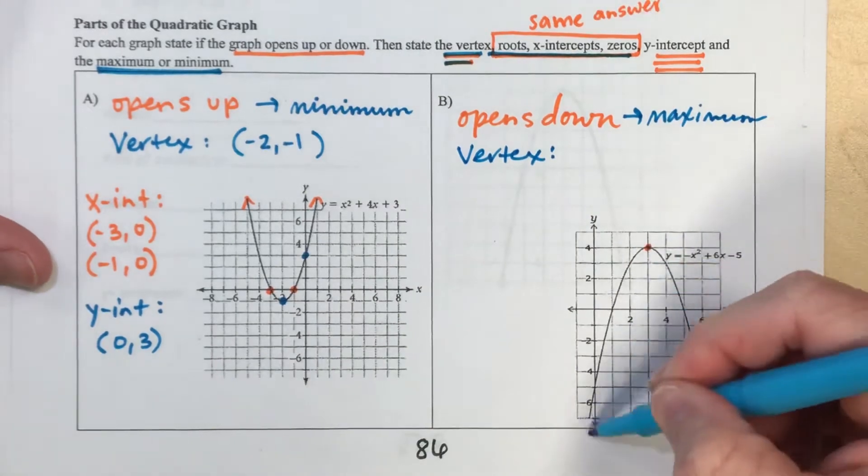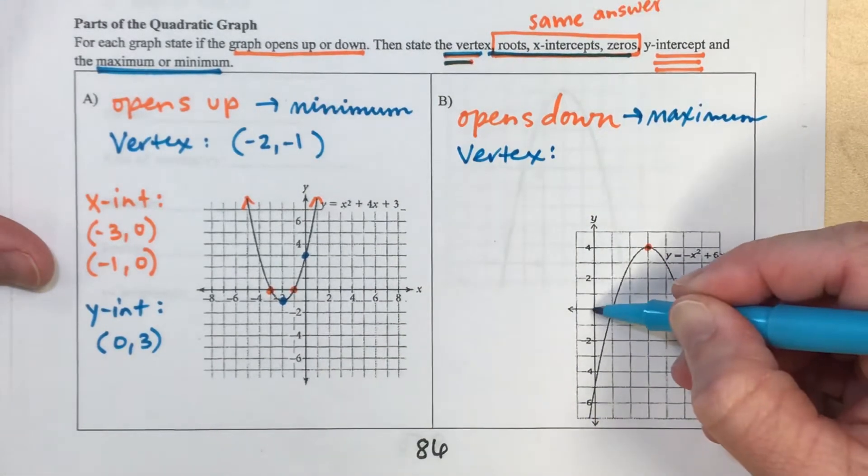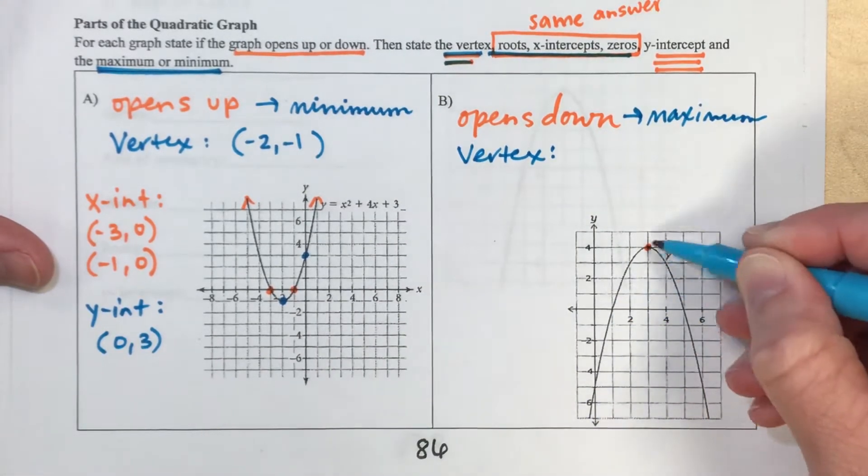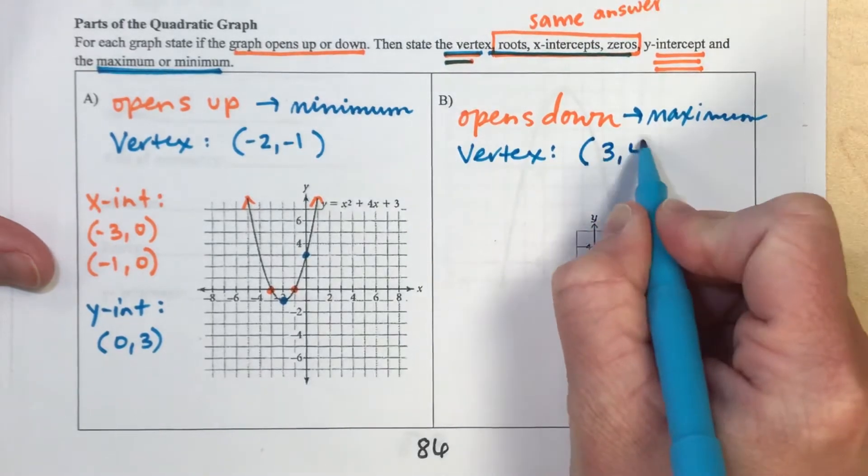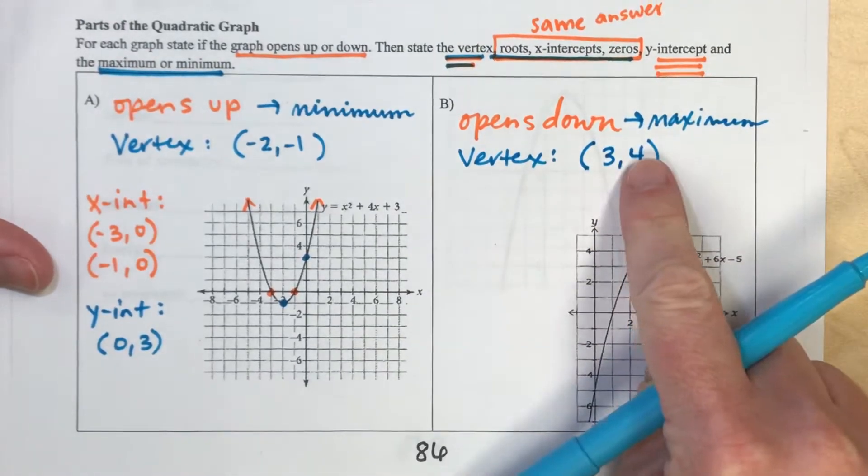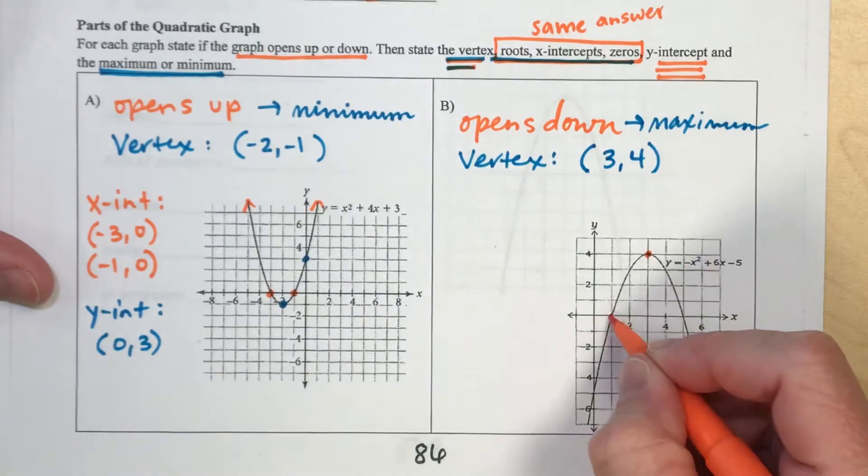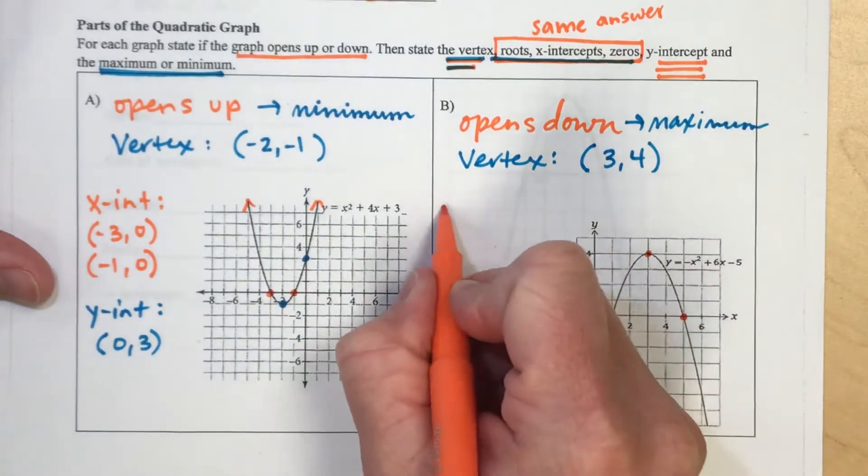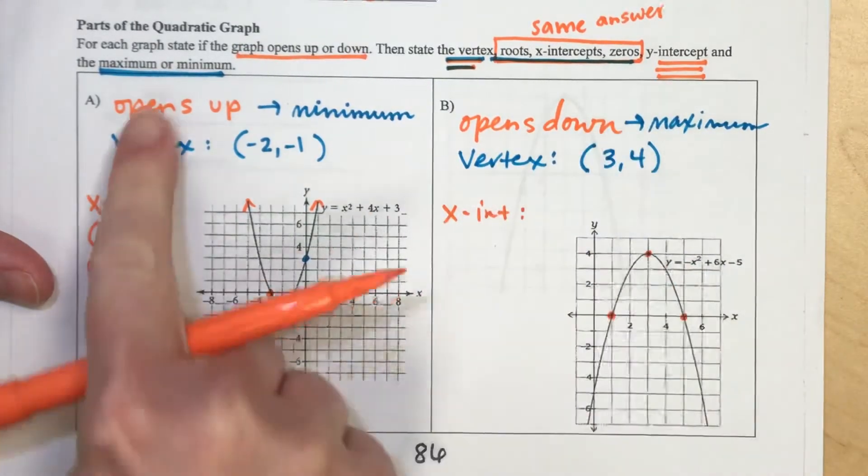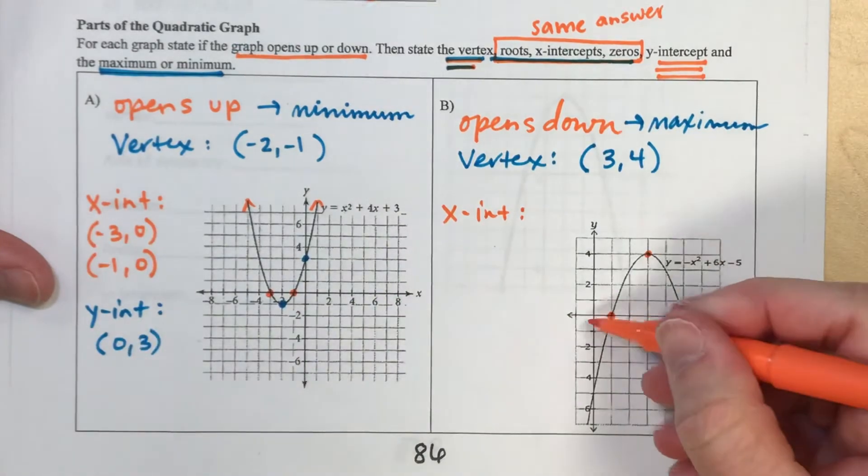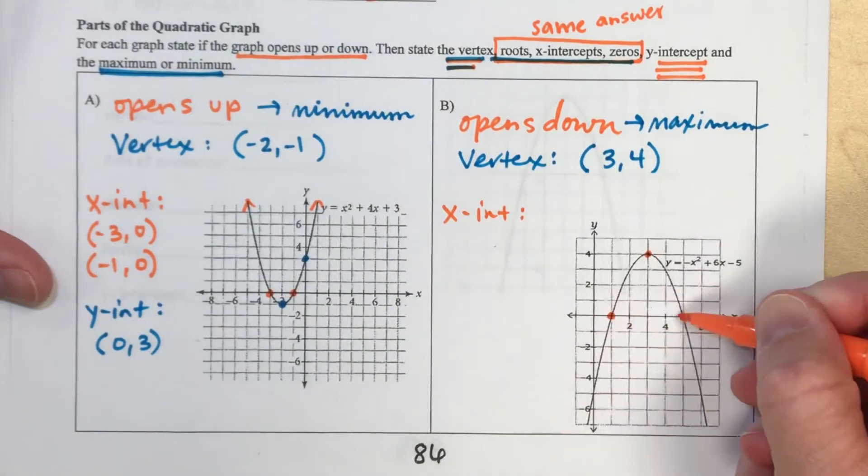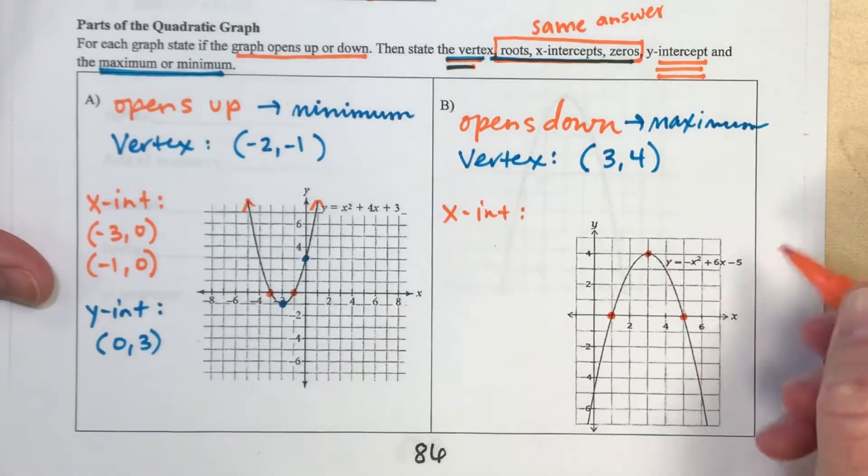So this point looks like it hits from the origin right 3 up 4. Right 3 up 4 would be the point 3, 4. And next, I'll talk about our x-intercepts. So I'm going to follow this same pattern here. Looks like from the origin it hits at 1 and in between 4 and 6, so 5. So 1, 0.